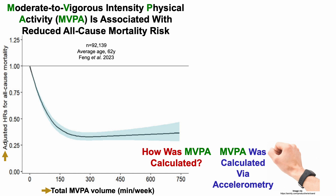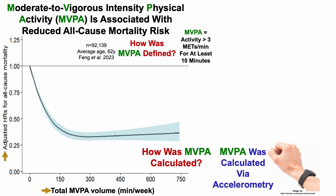An accelerometer is a device that can detect the intensity of motion, which then raises another question: how was moderate to vigorous physical activity defined? MVPA was defined as activity that was greater than 3 METs per minute for at least 10 minutes. But that raises another question — which exercises are greater than 3 METs per minute?